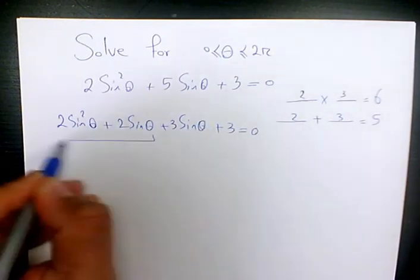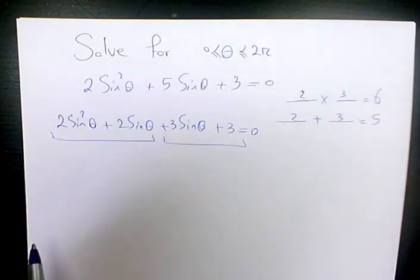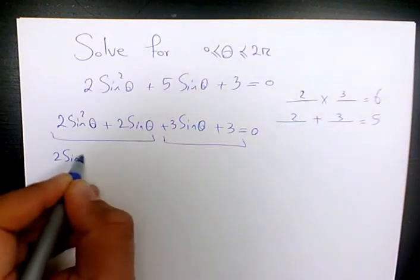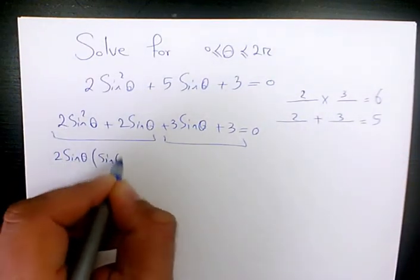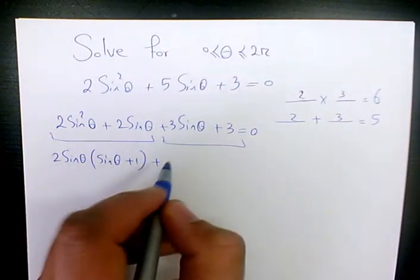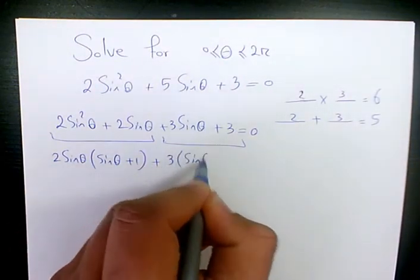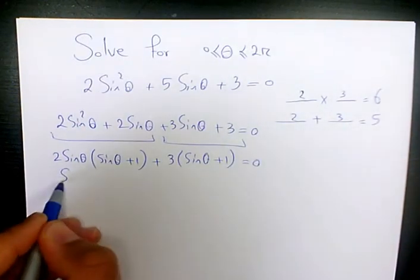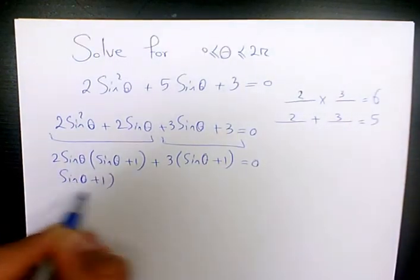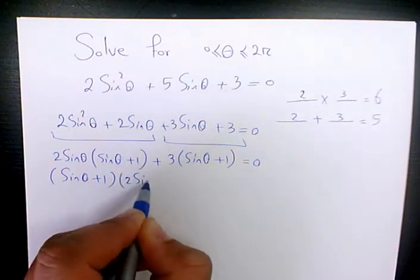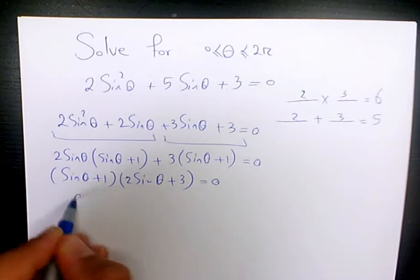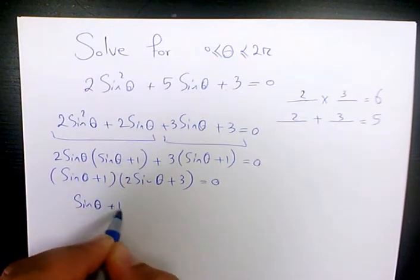Then I factor by grouping. I factor 2 sine theta times sine theta plus 1, and here I need to factor 3 times sine theta plus 1 equals zero. Then I factor sine theta plus 1 times 2 sine theta plus 3 equals zero.